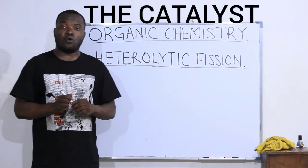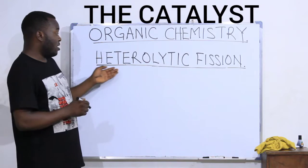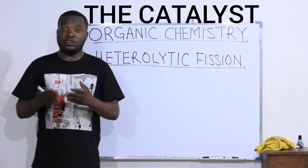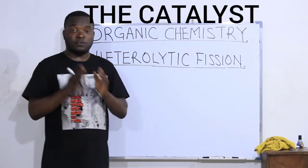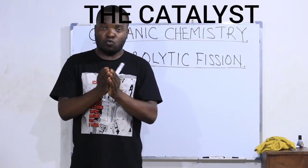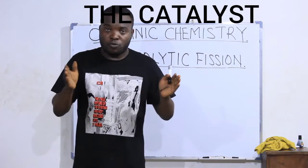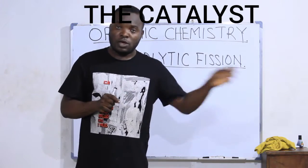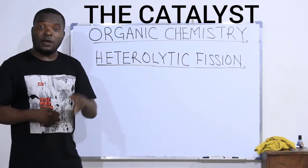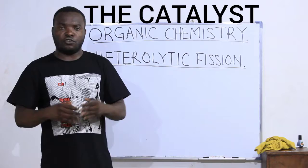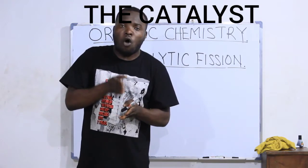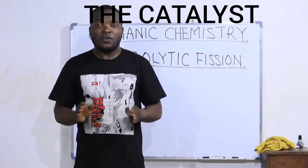In this class we are going to define and understand what heterolytic fission is all about. You can also call it heterolytic bond breaking — fission simply means breaking up. As I said in the previous videos, there are two types of bond breaking. The first way is the homolytic method, which involves equal sharing of the electrons after breaking up. The second method is the heterolytic method, which involves unequal sharing of electrons.